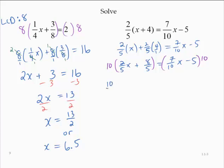I'll think of that 10 immediately as a 10 over 1. So I have 10 over 1 by 2/5 x plus 10 over 1 by 8/5. It is equal to 10 over 1 by 7/10 x minus 10 times 5.